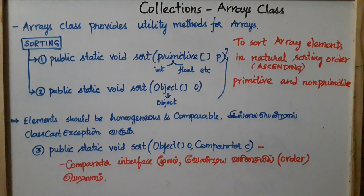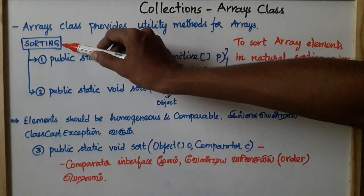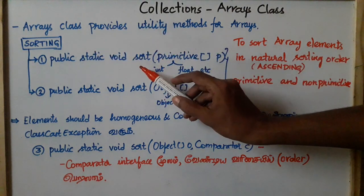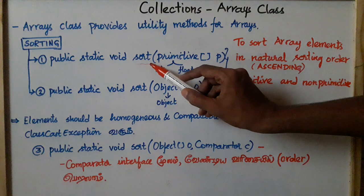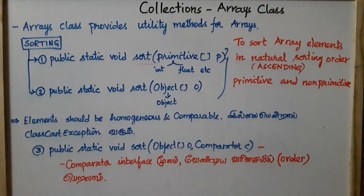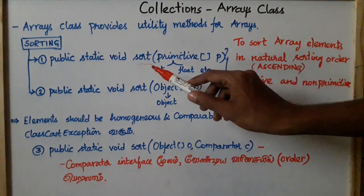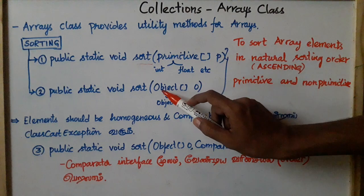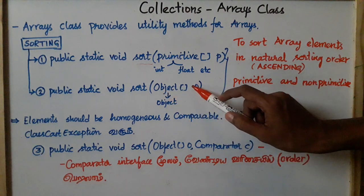Let's talk about the main methods. There are two types of methods, and the method supports overloading. There are sort methods for primitive arrays and object arrays.